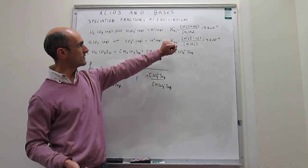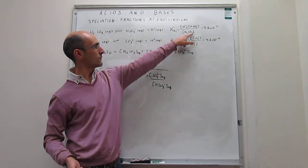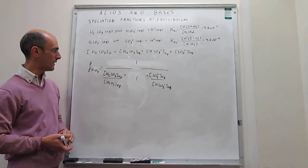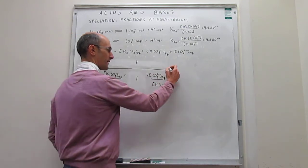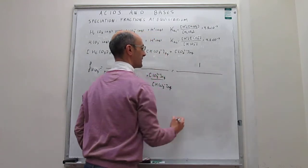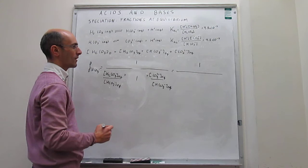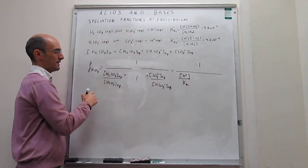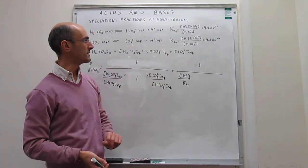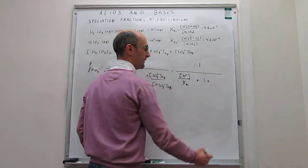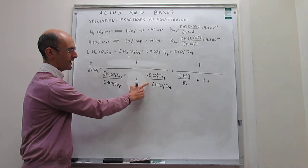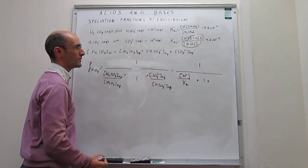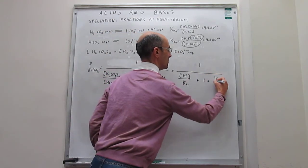It turns out we can get these ratios from the equilibrium constants of the processes. For the first ratio — H₂CO₃ over HCO₃⁻ — by rearranging the Ka1 expression, this equals the concentration of protons at equilibrium divided by Ka1. The central term is 1. For the ratio of carbonate ions over bicarbonate, identified from the Ka2 expression, rearranging gives Ka2 divided by the concentration of protons.